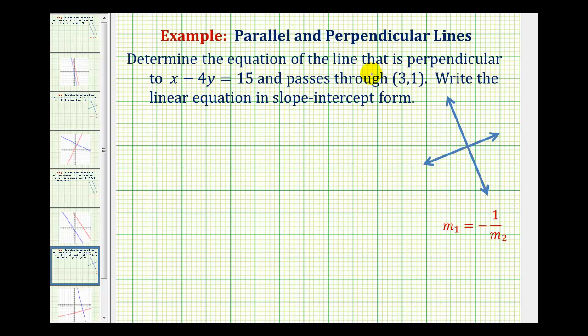We want to determine the equation of the line that is perpendicular to the line given by the equation x minus 4y equals 15, and passes through the point (3, 1). We want the linear equation in slope-intercept form.